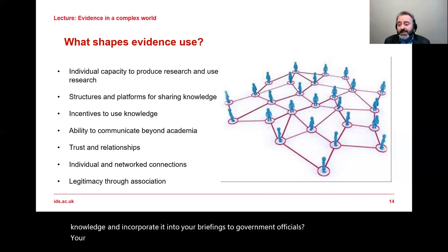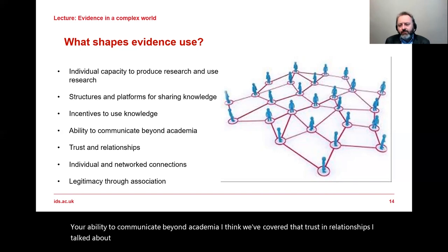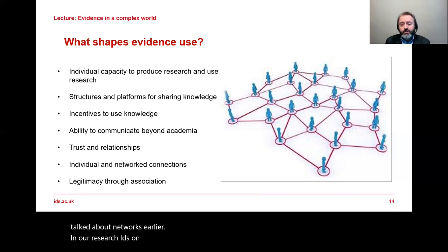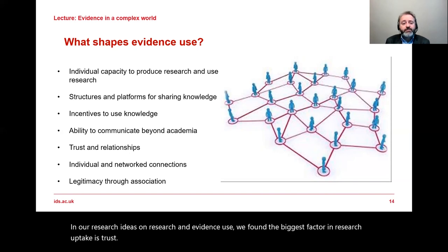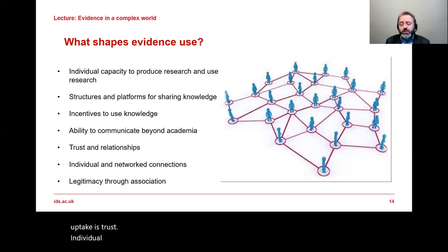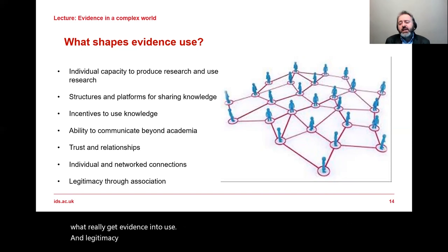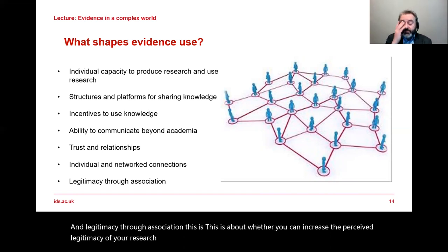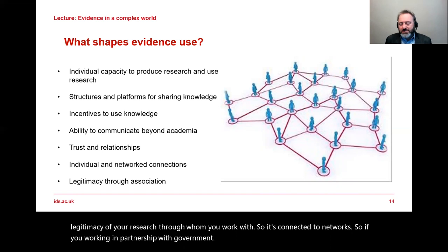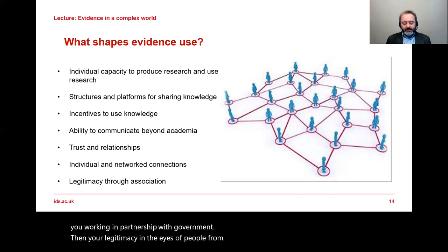There are also capacity issues around our ability to produce and use research — both for those who conduct research and those expected to make use of it. Are there structures and platforms in place for sharing knowledge? Are there incentives to use research? If you're a policy advisor under pressure to produce viable policy options, and the research just makes things more complicated and uncertain, where is the incentive to incorporate it into your briefings? Your ability to communicate beyond academia, and trust and relationships — in IDS research on evidence use, we found the biggest factor in research uptake is individual and network trust connections. And legitimacy through association: working in partnership with government, for example, greatly increases your perceived legitimacy with people from within government.